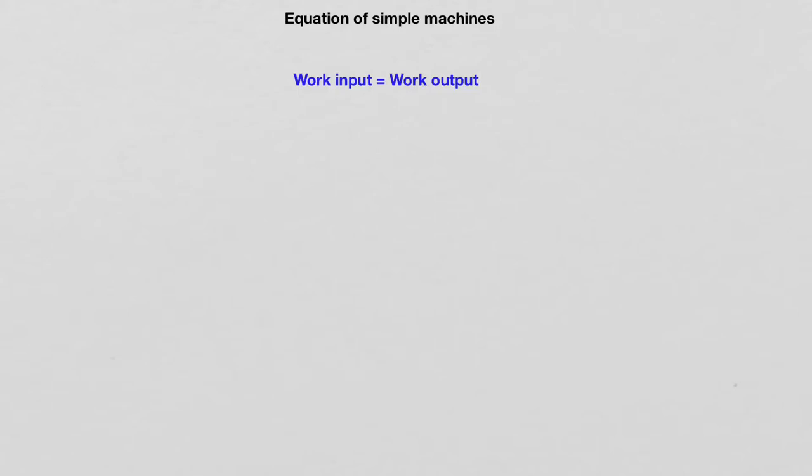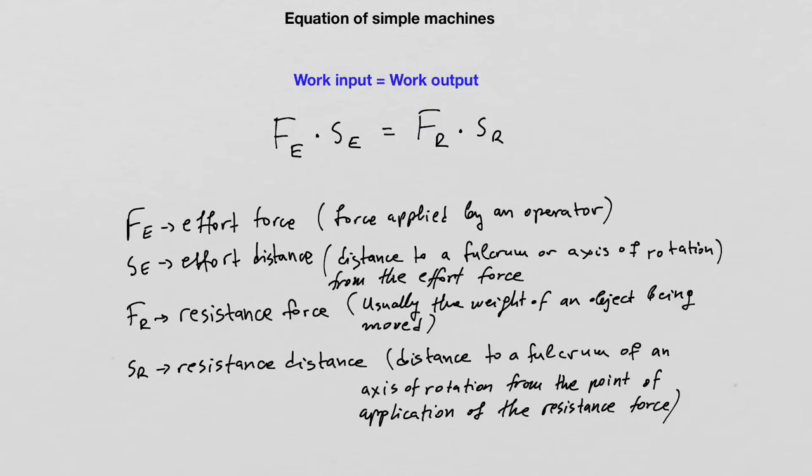The energy transfer during the operation of a simple machine can be described using the equation of simple machines. Since simple machines transfer energy from one place to another, the principle of operation is based on the fact that the work input into the simple machine is equal to the work output. Since work done by a force is the product of force and distance, I can replace input and output work with their equivalent expressions. The equation of simple machines looks like this: the effort force times the effort distance is equal to the resistance force times the resistance distance.